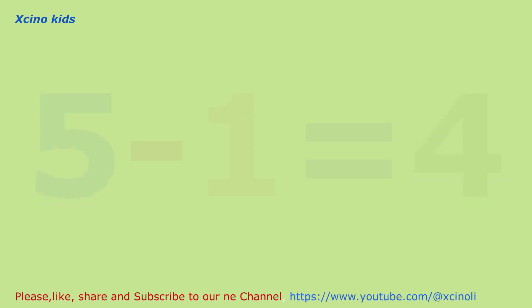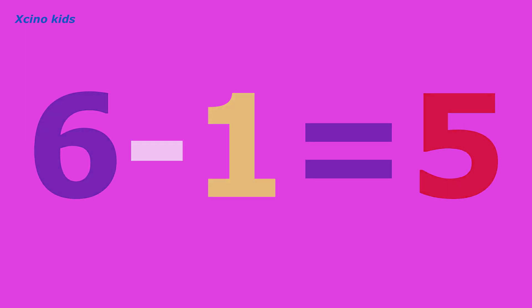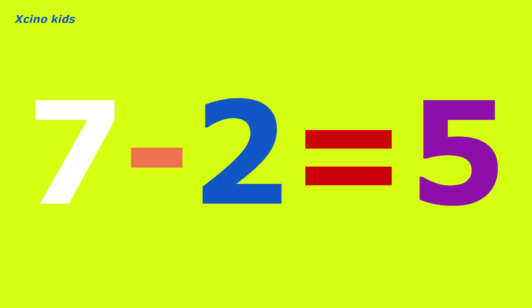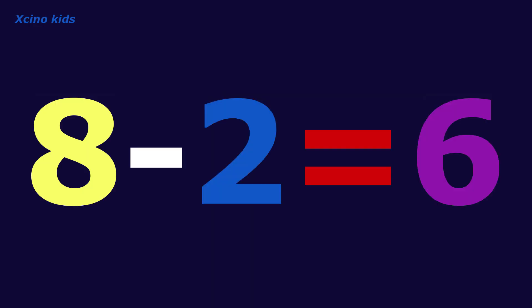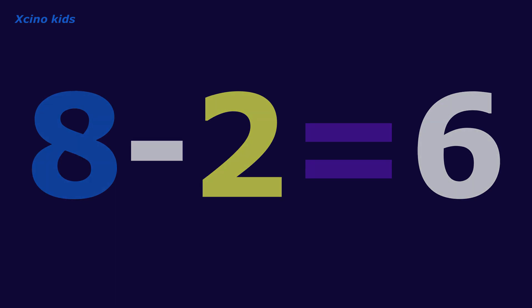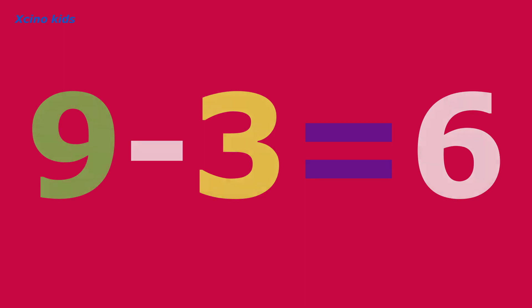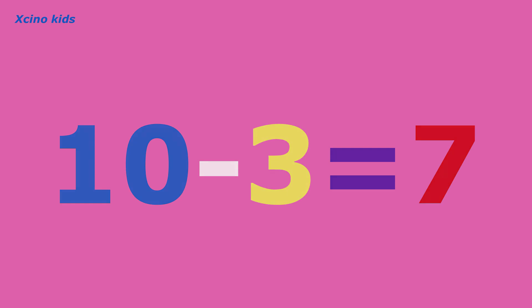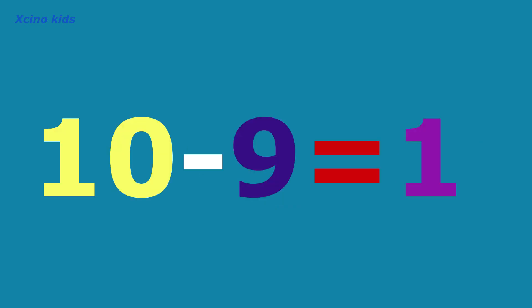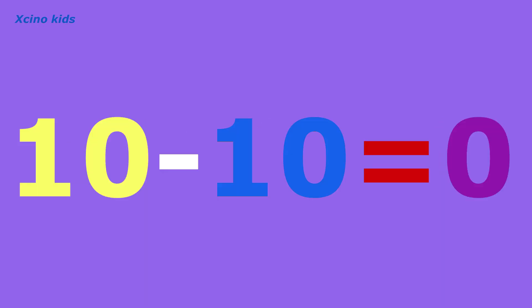5 minus 1 is equal to 4. 6 minus 1 is equal to 5. 7 minus 2 is equal to 5. 8 minus 2 is equal to 6. 9 minus 3 is equal to 6. 10 minus 3 is equal to 7. 10 minus 9 is equal to 1. 10 minus 10 is equal to 0.